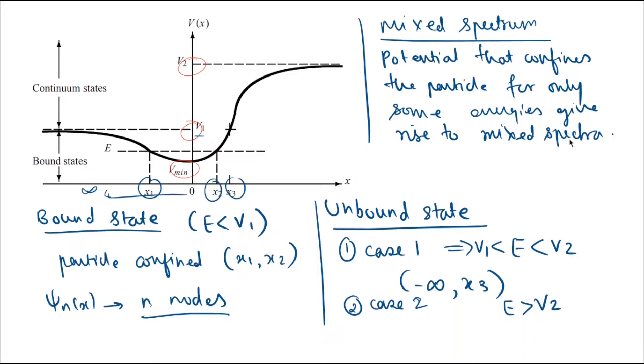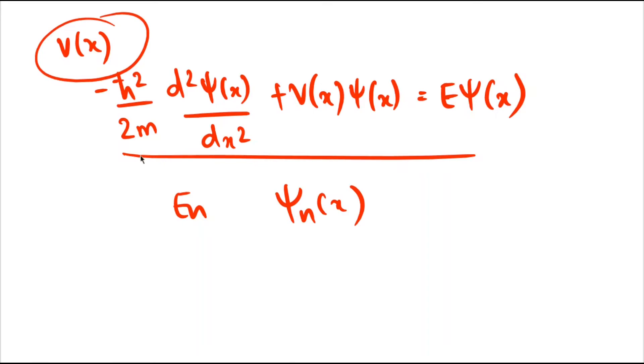We can say that potentials that confine the particle for only some energies give rise to mixed spectra, and the motion of the particle for such potentials is confined for some energy values only. As we saw here, solving this Schrödinger equation will give us the energy eigenvalue and the corresponding wave function ψn(x).